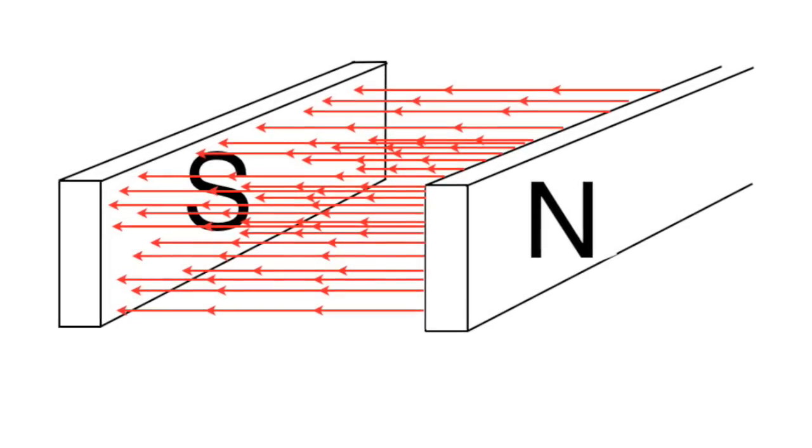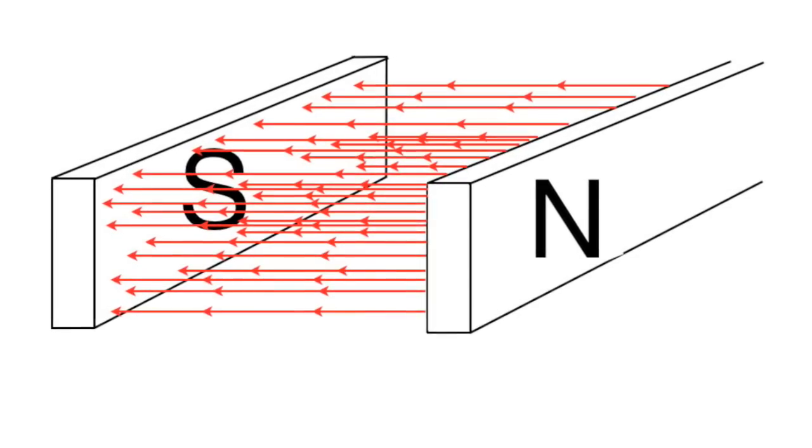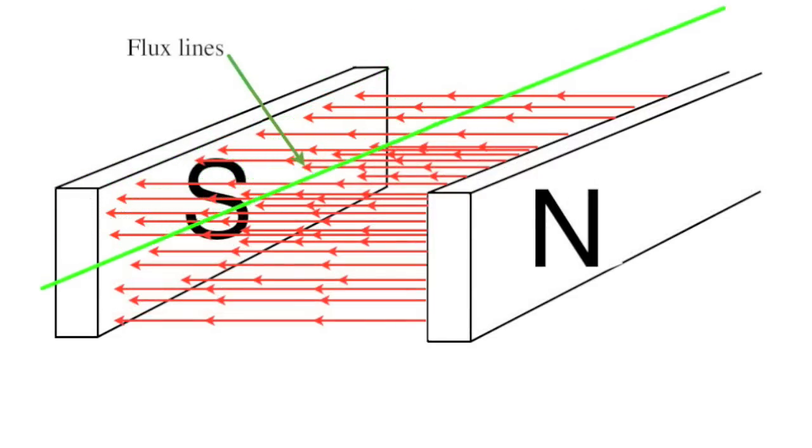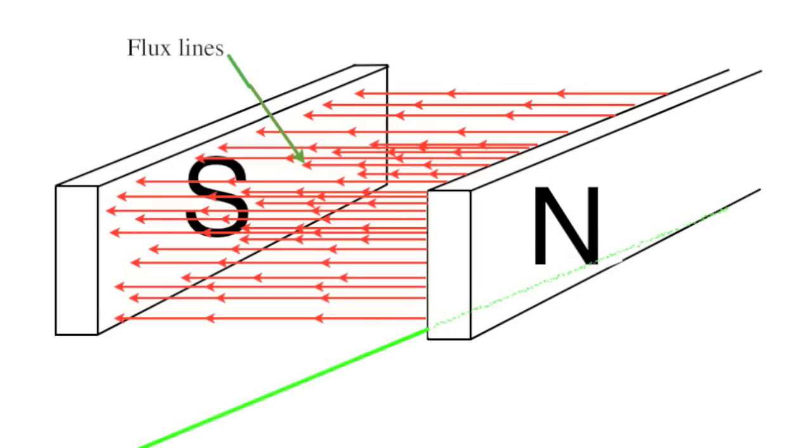We imagine magnetic flux being a series of lines running from the north pole to the south. If we take a wire and cut through this magnetic flux, an EMF is induced between the ends of the wire.